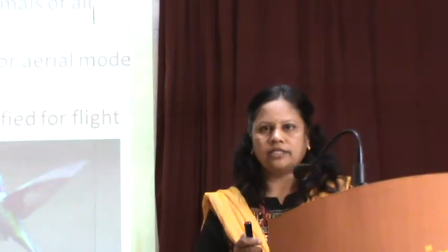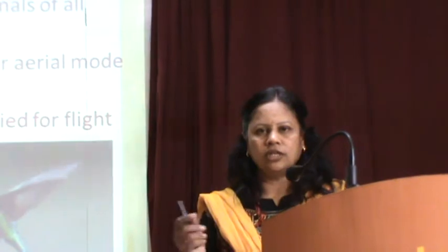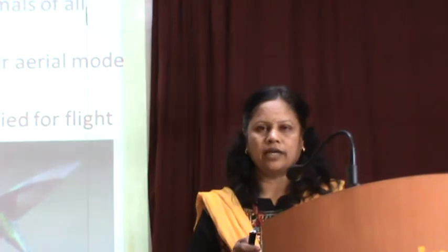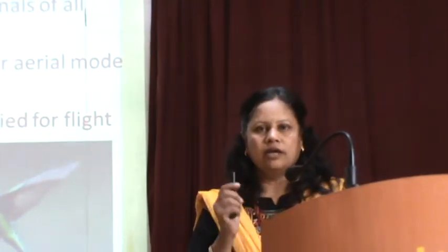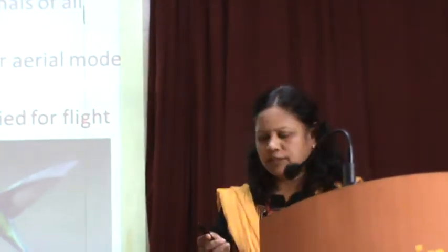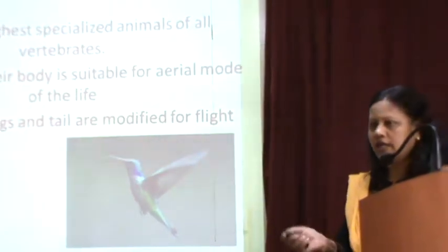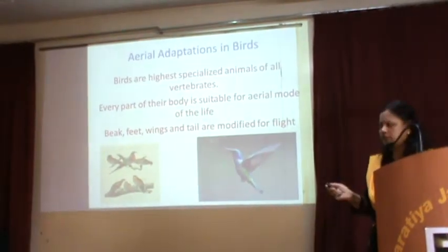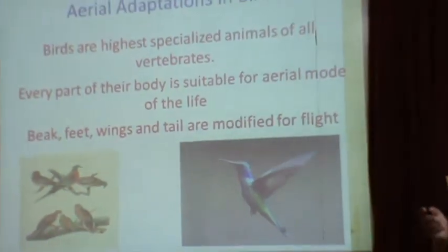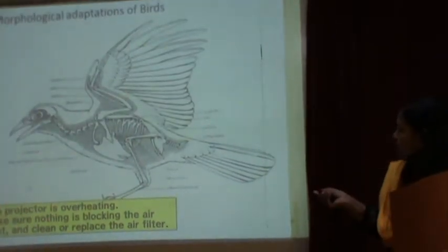Birds are highly specialized animals. They have morphological as well as anatomical modifications in their body, which allow them to live on trees as well as take flight. All body parts, internally as well as externally, are highly modified. For example, beaks and feet are modified organs seen only in birds, not in other animals.